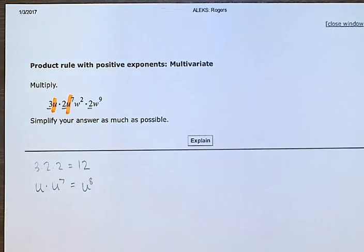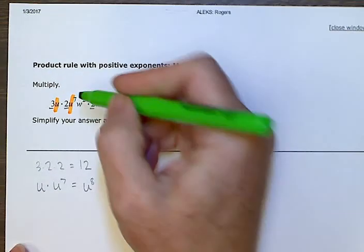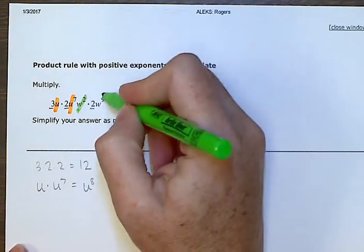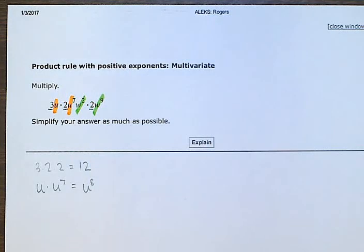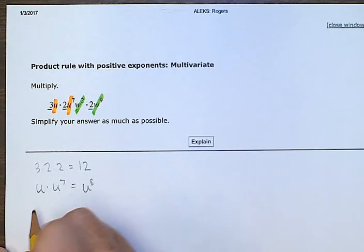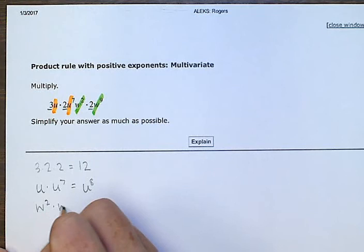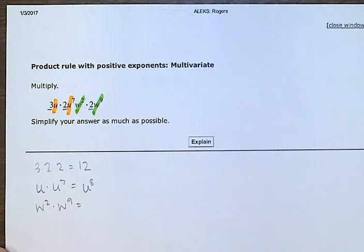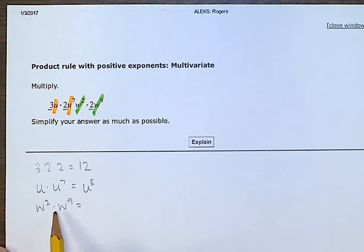Now let's look at the w's. w to the 2nd and w to the 9th. So when we are multiplying variables together and they have powers, then we add powers.